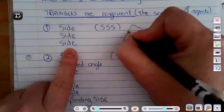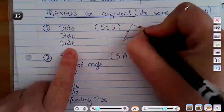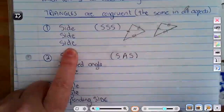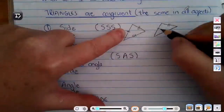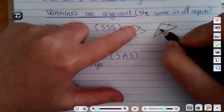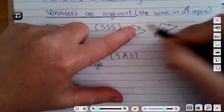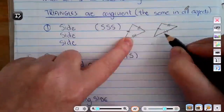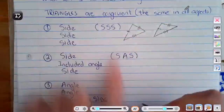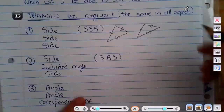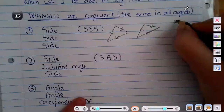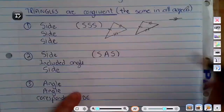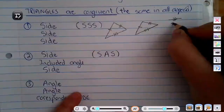If in two triangles we can find three sides that are exactly the same, we can say those two triangles are congruent. For example: the first side is the same length as that one — one stripe means equal length, two stripes means equal, three stripes means equal. Note: parallel arrows mean parallel, not equal length — that's an important distinction.